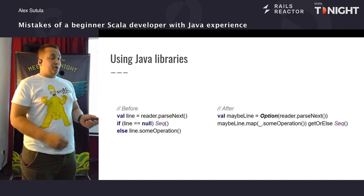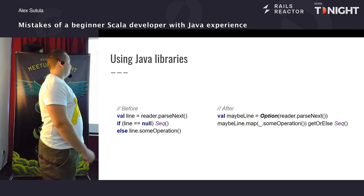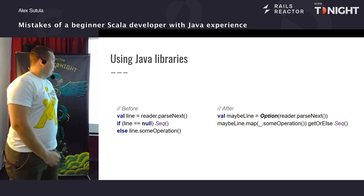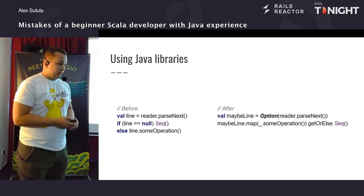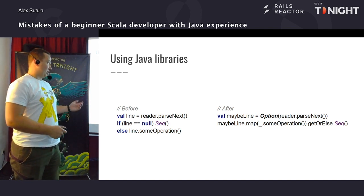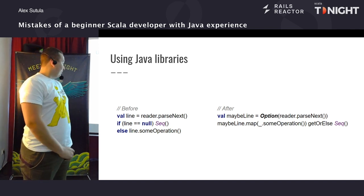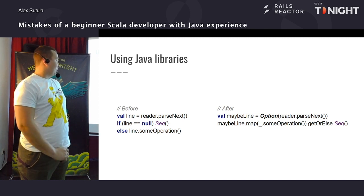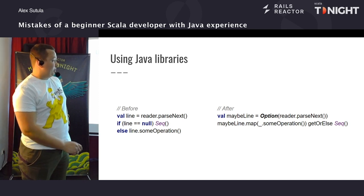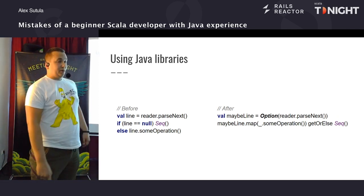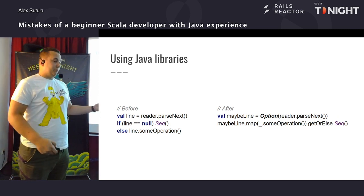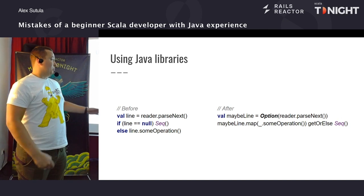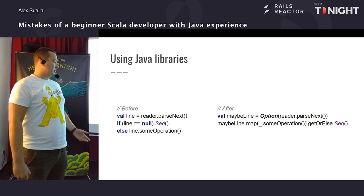Де може ще бути ця проблема? Ця проблема може бути при використанні Java бібліотек. Дуже часто можна зустріти таку проблему в коді, коли ми намагаємося зробити те, для чого Java була якби не розрахована. Ми постійно маємо тримати це в голові. Навіщо, коли ми обгортаємо в Option і за допомогою стандартних методів колекцій та інших прийомів можемо робити це більш ідіоматично.